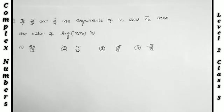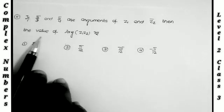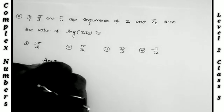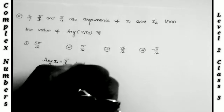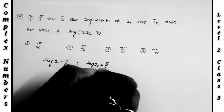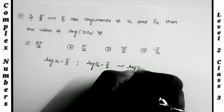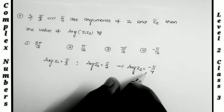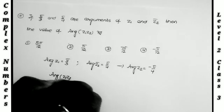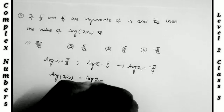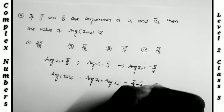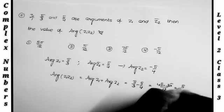Next problem: if π/3 and π/4 are the arguments of z1 and z̄2 respectively, find arg(z1·z2). Given: arg(z1) = π/3 and arg(z̄2) = π/4. Since arg(z̄) = -arg(z), we have arg(z2) = -π/4. Using the formula arg(z1·z2) = arg(z1) + arg(z2), we get π/3 + (-π/4) = (4π - 3π)/12 = π/12. The answer is π/12, the second option.